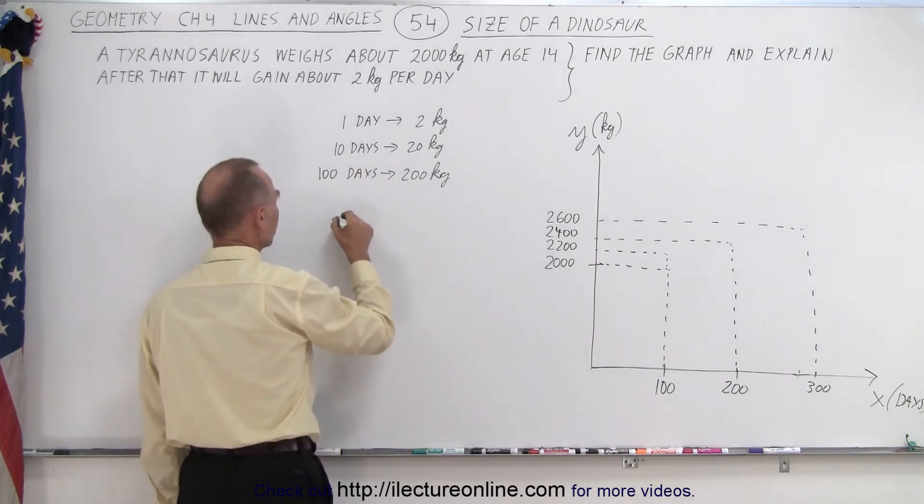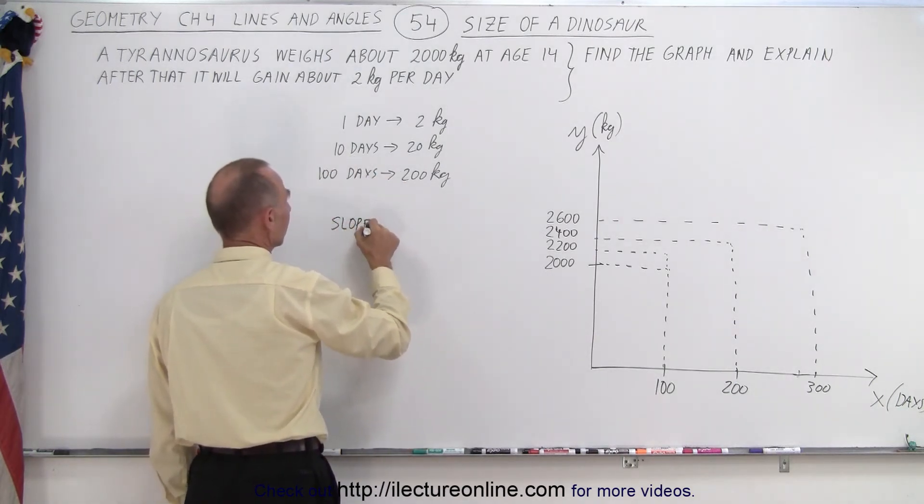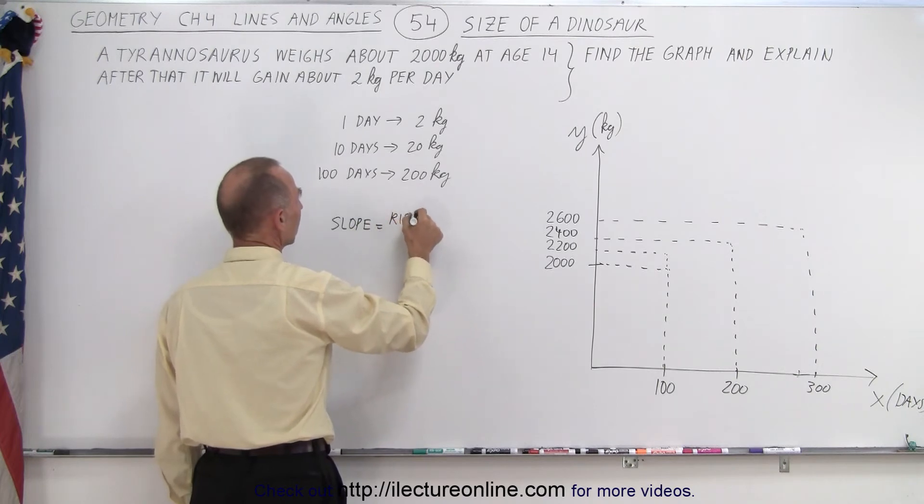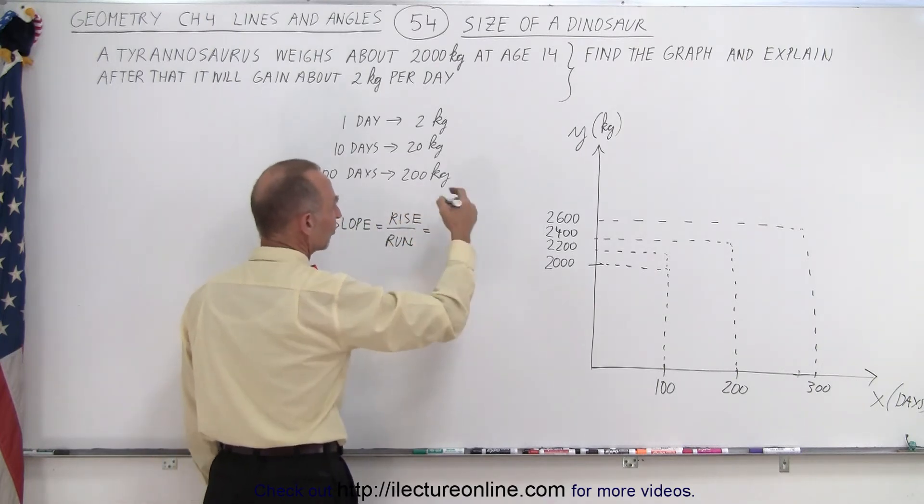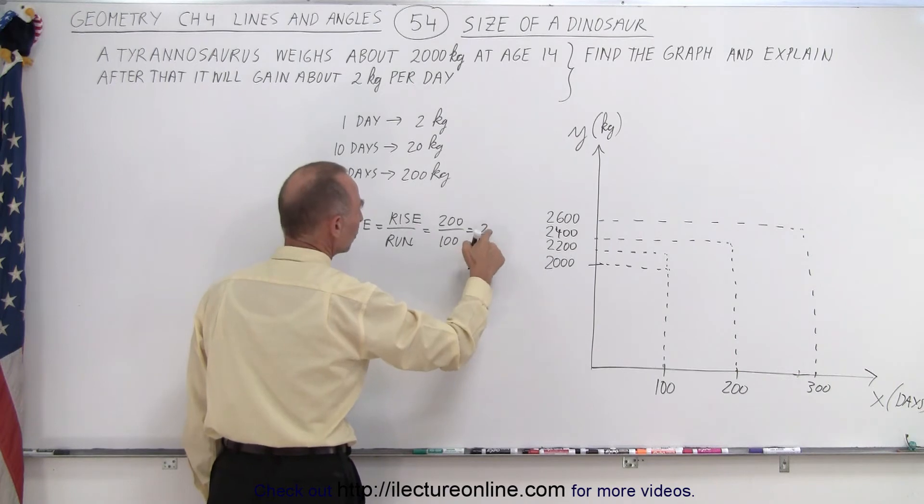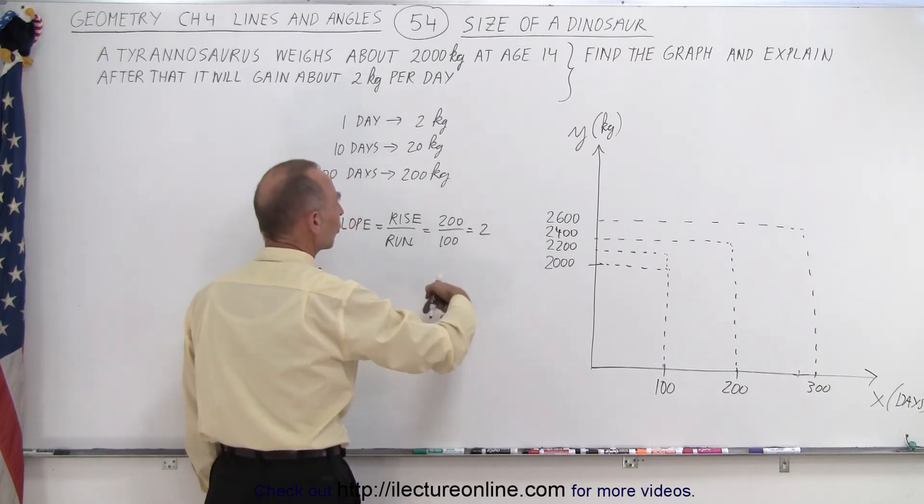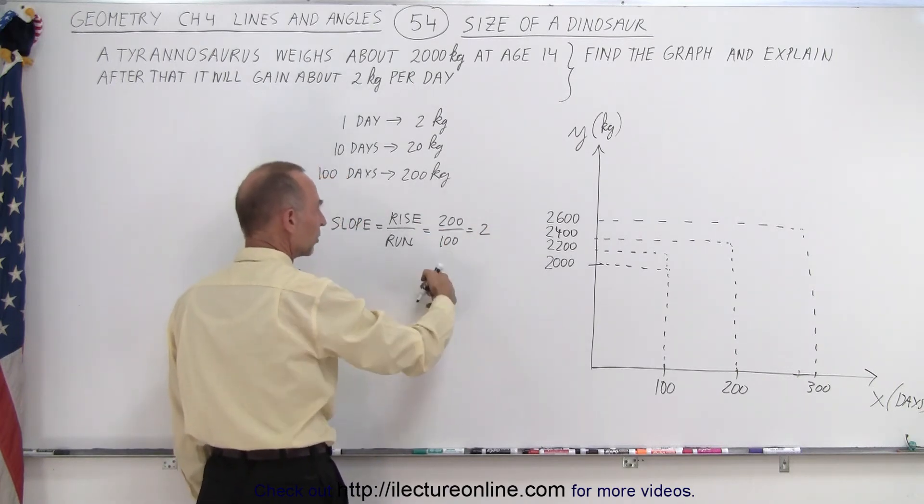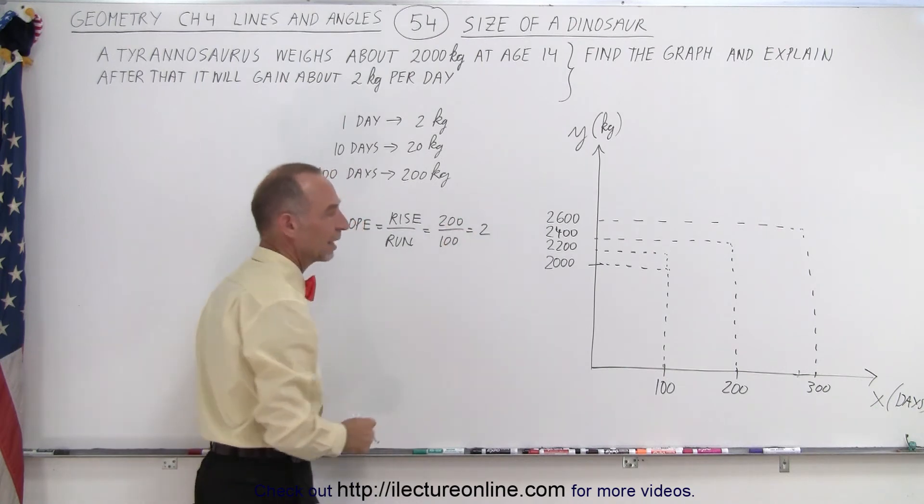So we can say that the slope is equal to the rise over the run which is equal to a rise of 200 over a run of 100 days which is 2 to 1 or 2. In other words, 2 kilograms every day corresponds to 200 kilograms for 100 days or 20 kilograms for 10 days and so forth.